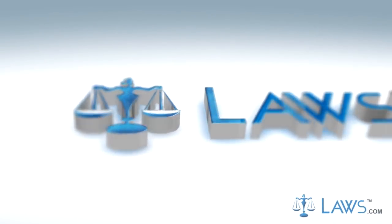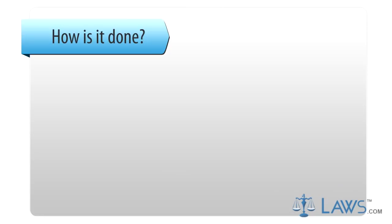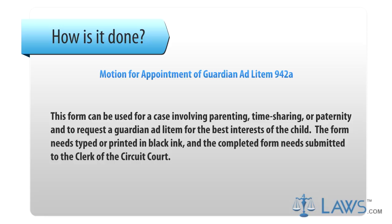Laws.com Legal Forms Guide. Motion for appointment of guardian ad litem 942A. This form can be used for a case involving parenting, time sharing, or paternity, and to request a guardian ad litem for the best interests of the child. The form needs to be typed or printed in black ink, and the completed form needs to be submitted to the clerk of the circuit court.